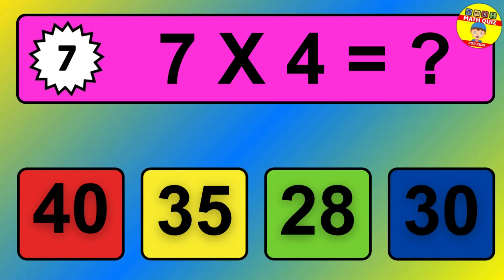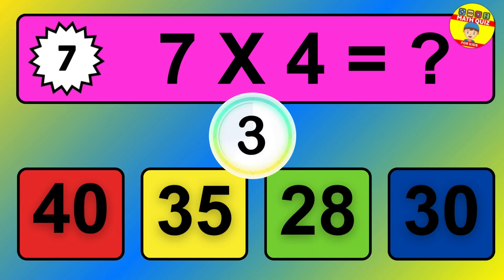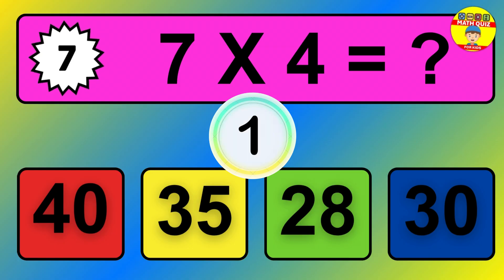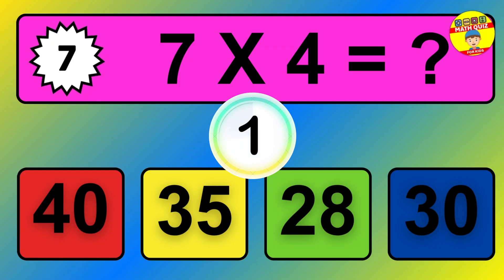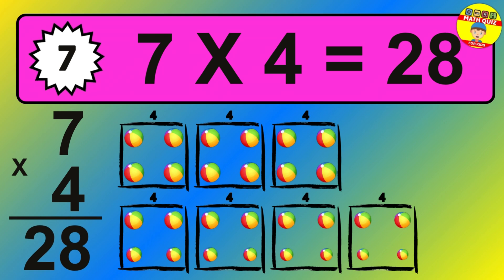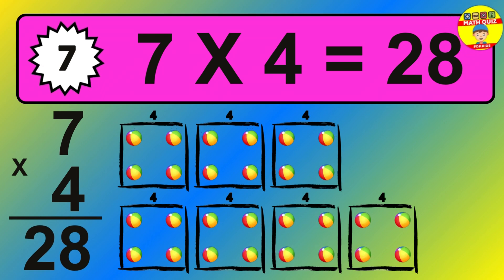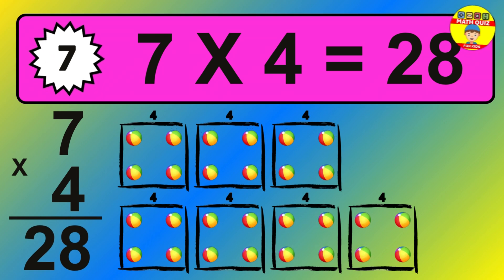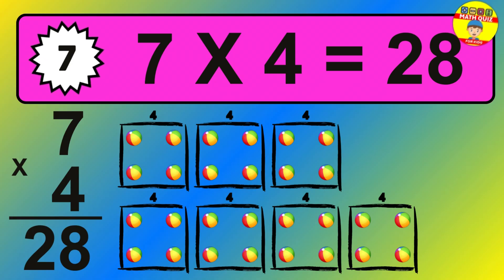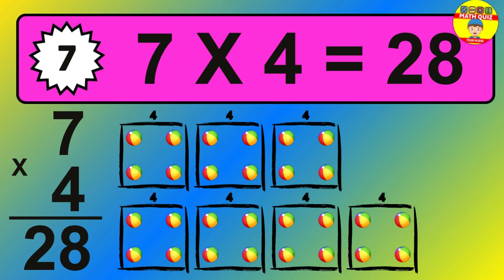Question 7. 7 times 4 equals what? The answer is 7 times 4 is 28. To calculate, we have 7 groups with 4 balls each one. So how many balls do we have? 28 balls.